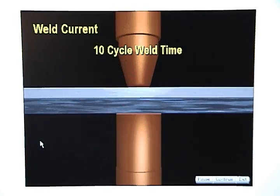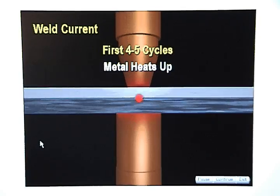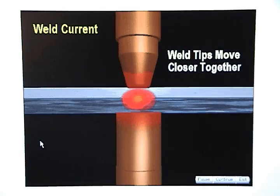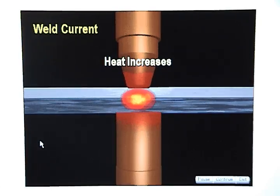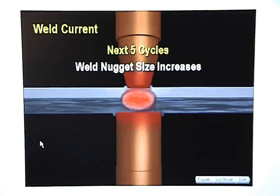At the start of a 10-cycle weld time, current will begin to flow. The metal heats up over the first four to five cycles, and the weld tips move closer together. As current flows, the heat increases, and a weld nugget begins forming by the sixth cycle. The size of the weld nugget increases every half cycle for the next five cycles.